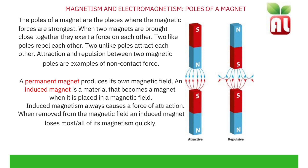A permanent magnet produces its own magnetic field. An induced magnet, sometimes known as a temporary magnet, is a material that becomes a magnet when it is placed into a magnetic field. For example, rubbing a paper clip on the end of a permanent magnet — that paper clip is now magnetized. Removing the paper clip from the magnetic field removes the magnetism. Induced magnetism always causes a force of attraction; the induced magnet will only ever attract other paper clips, with no force of repulsion.